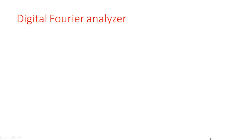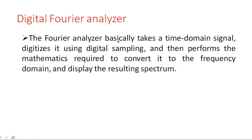In this video we will learn how a digital Fourier analyzer works along with its block diagram. By seeing the name itself, we can say that it is a Fourier transform analyzer — it shows the transformed signal, meaning a time domain signal is converted into a frequency domain. Those samples are going to be displayed on the screen of a CRT.